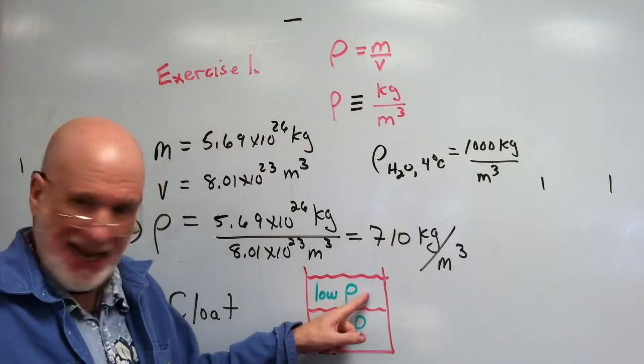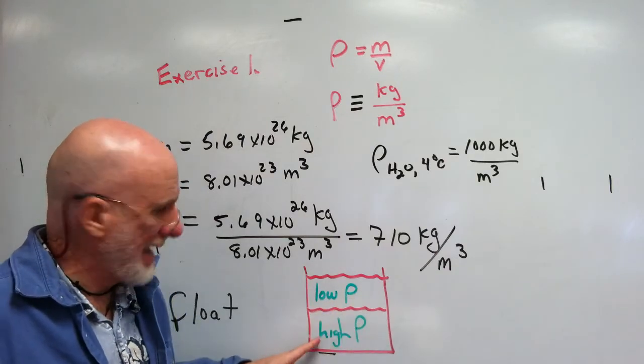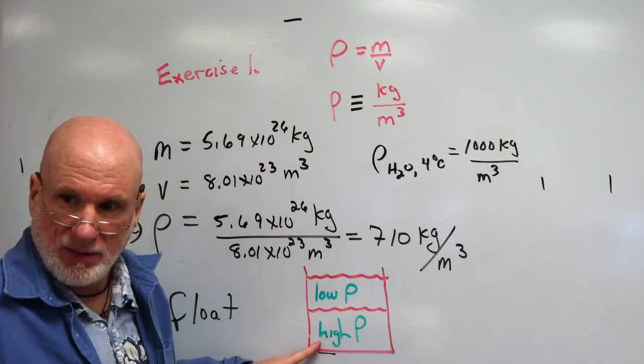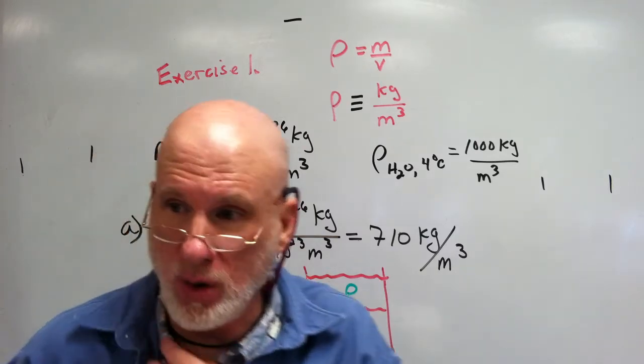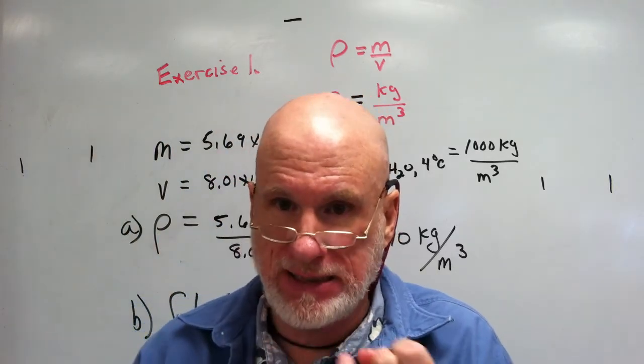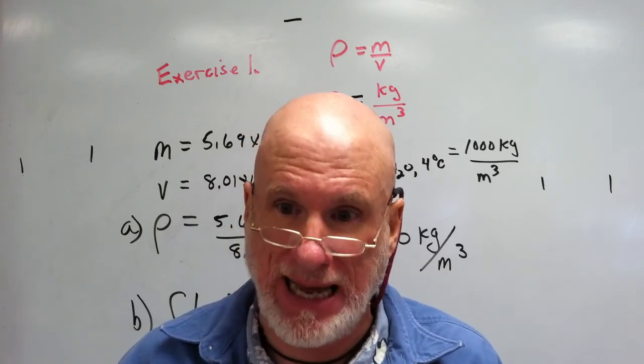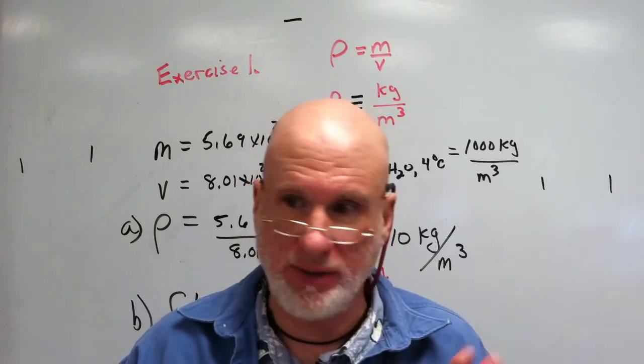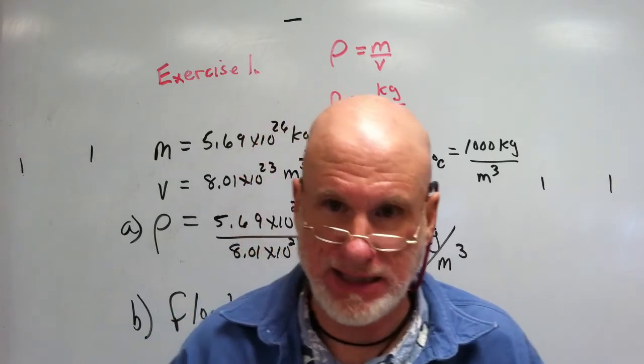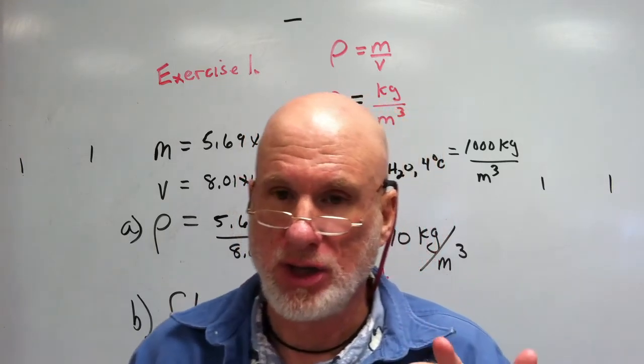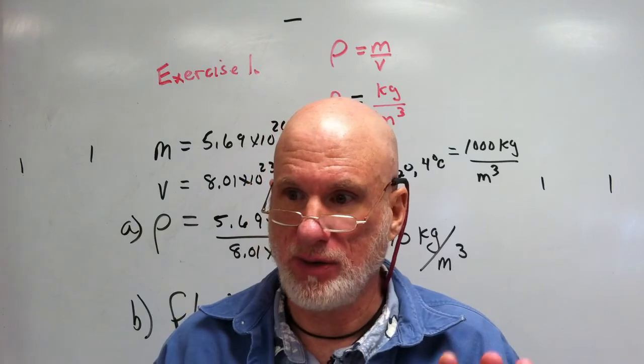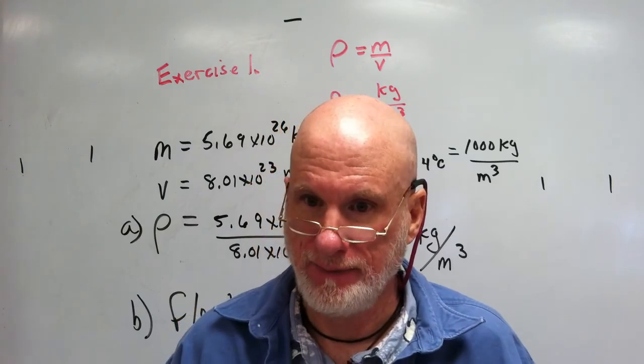So that will be Saturn, that will be the water. Saturn is actually part of a group of planets - Saturn, Neptune, Uranus - they're called the gas planets. So they're generally less dense than the inner planets: Mars, Earth, Venus, and Mercury. They're the rock planets. Okay, clear.